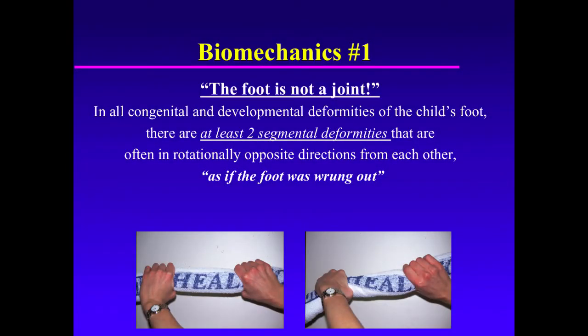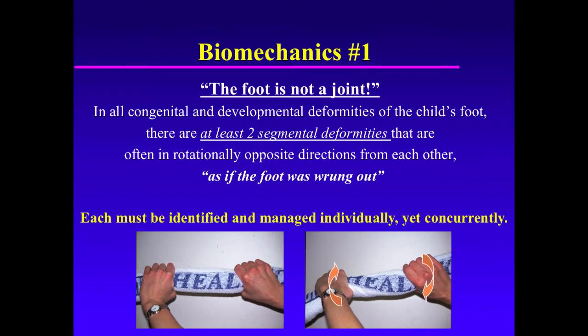In all congenital and developmental deformities of the child's foot, there are at least two segmental deformities that are often in rotationally opposite directions from each other — it's as if the foot was wrung out. Each of these individual segmental deformities must be identified and managed individually, yet concurrently.